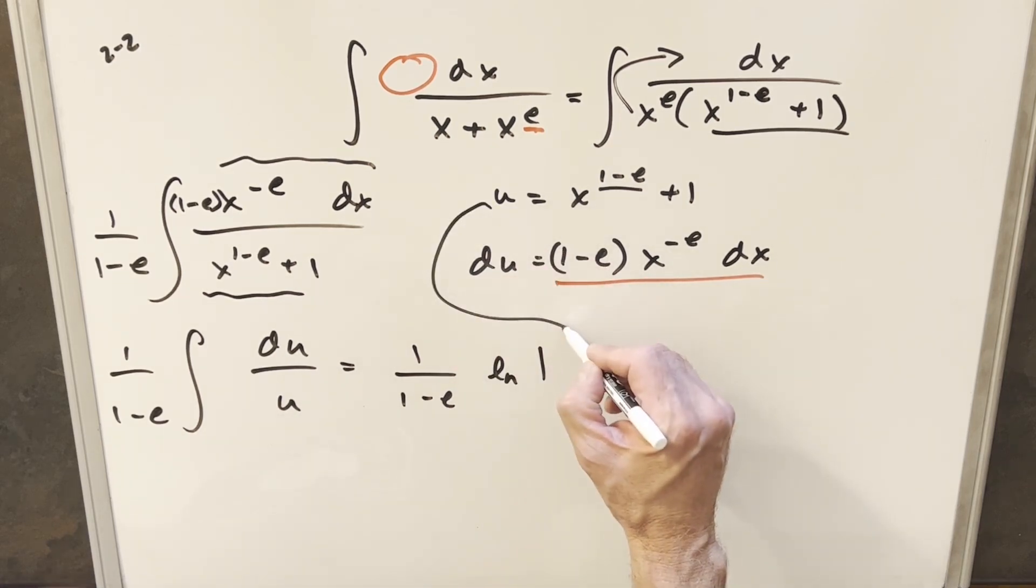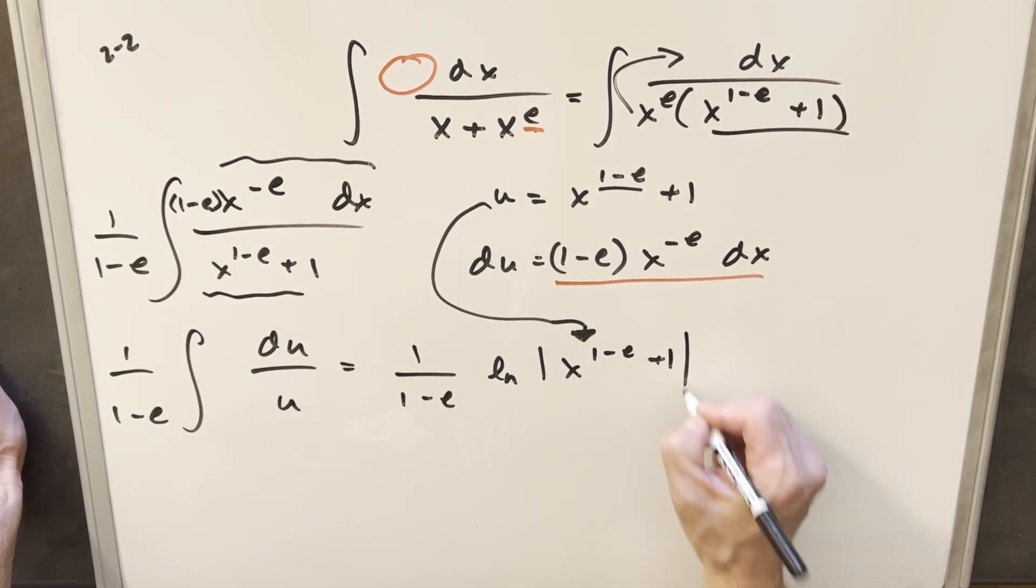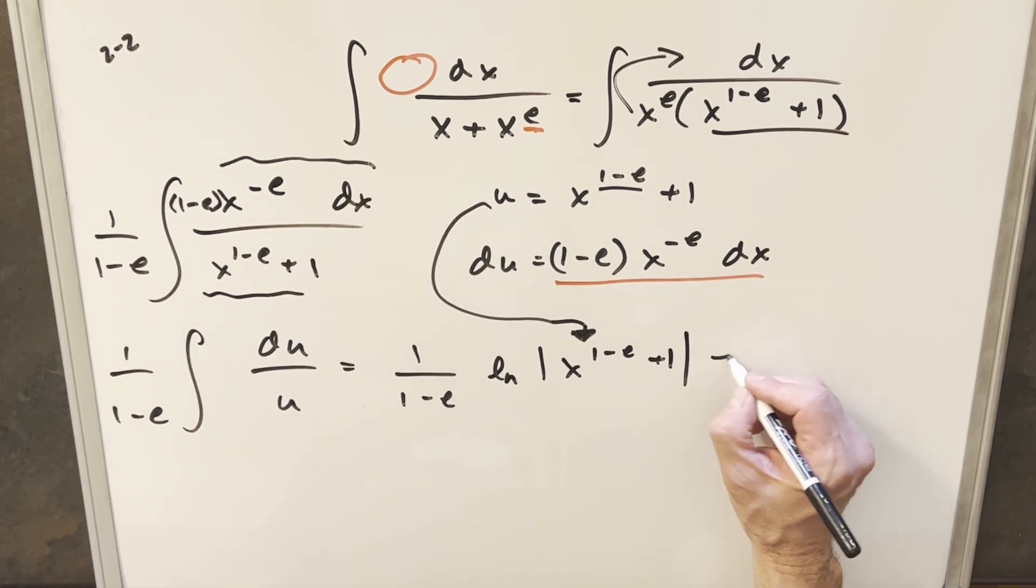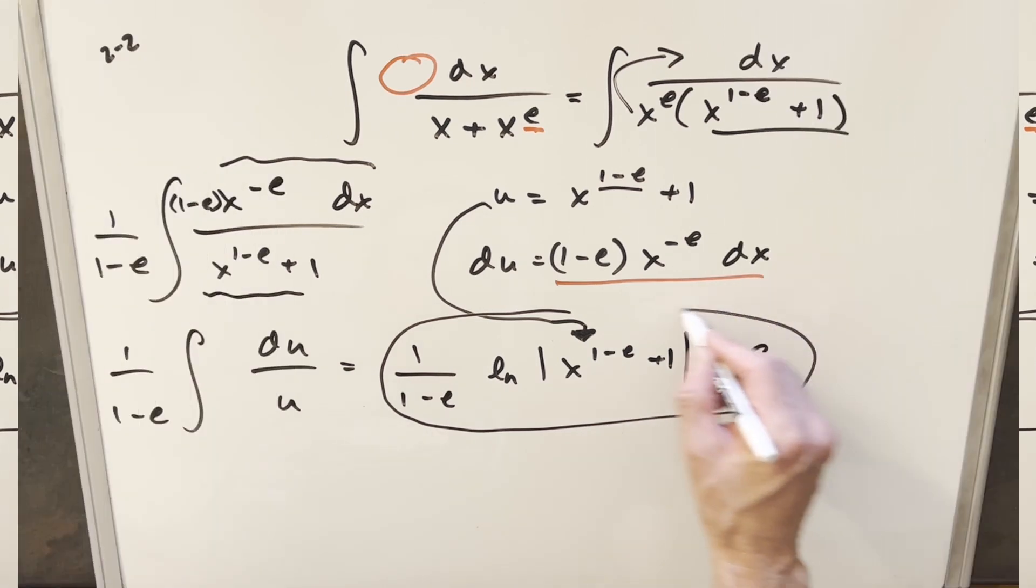I think what I'm going to do is let's just back substitute all in one step here. So this is going to become x to the one minus e plus one. Keep our absolute value around it plus c. And that's going to be our solution. So I'll just circle it and move on.